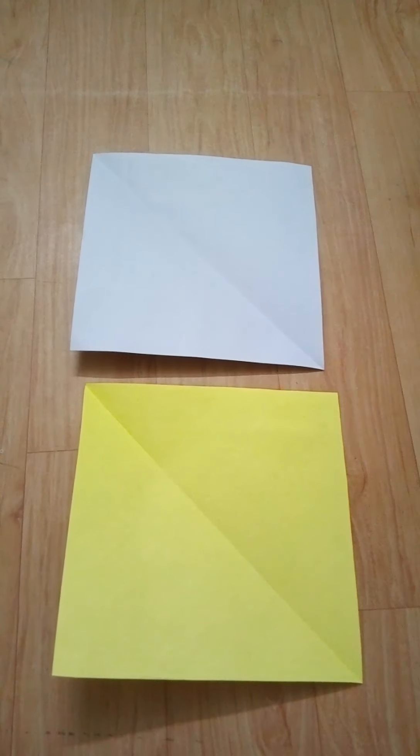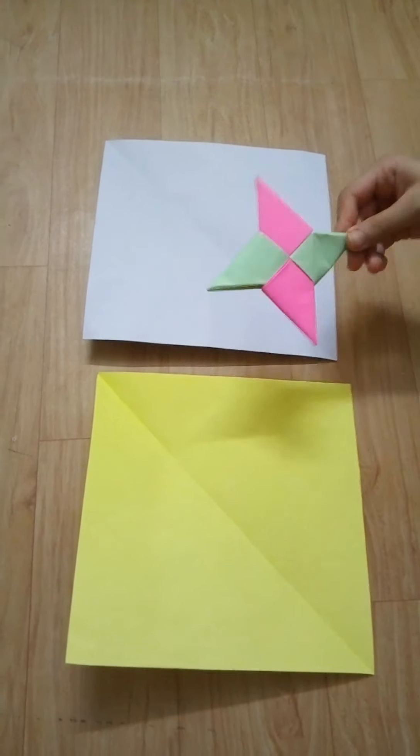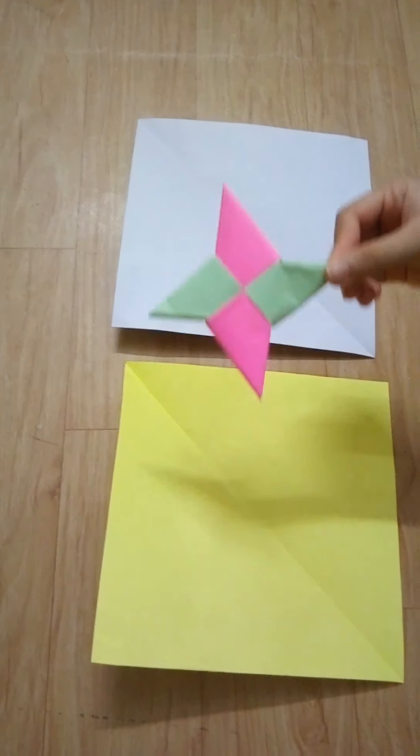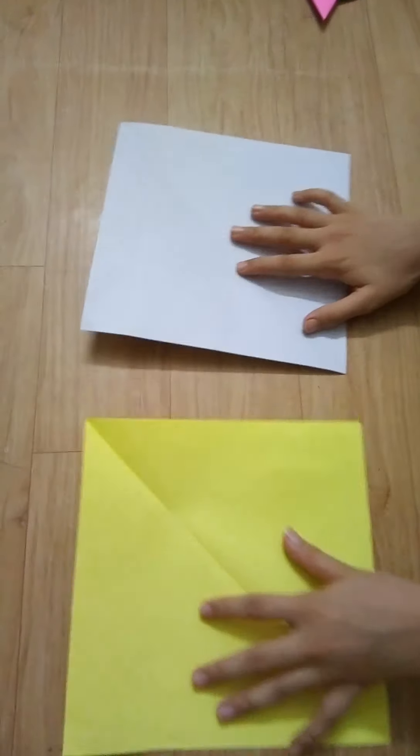Hi friends, today my name is Ayush and I am going to teach you how to make a ninja star. It looks like this, see. So you have to take two papers in a square.